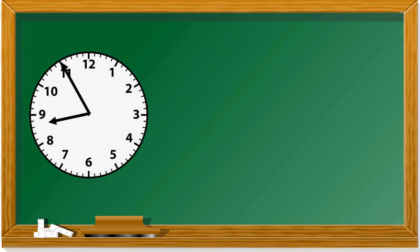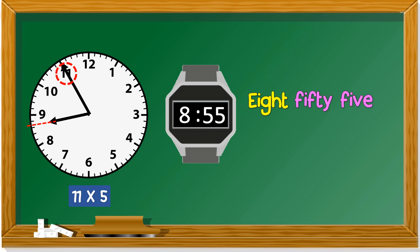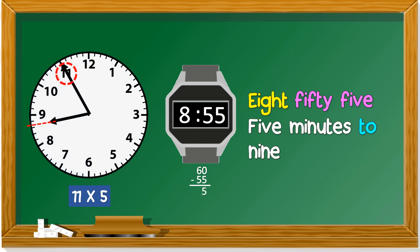Another example. The hour hand points between 8 and 9 — still 8 o'clock. The minute hand is at 11, so we get 11 times 5, which is 55. The time is 8:55. In the 'to' area, how many minutes to move to 12? We get 60 minus 55, which is 5. So it's '5 minutes to 9' — almost 9 o'clock.